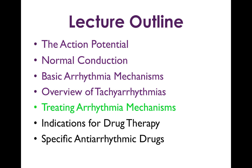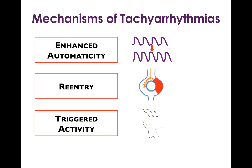Now we're going to look at how to treat arrhythmia mechanisms from a conceptual standpoint. Recall that we talked about three mechanisms of tachyarrhythmias: enhanced automaticity, re-entry, and triggered activity. So how do we deal with each of these different types of rhythm problems? How do we make them go away?